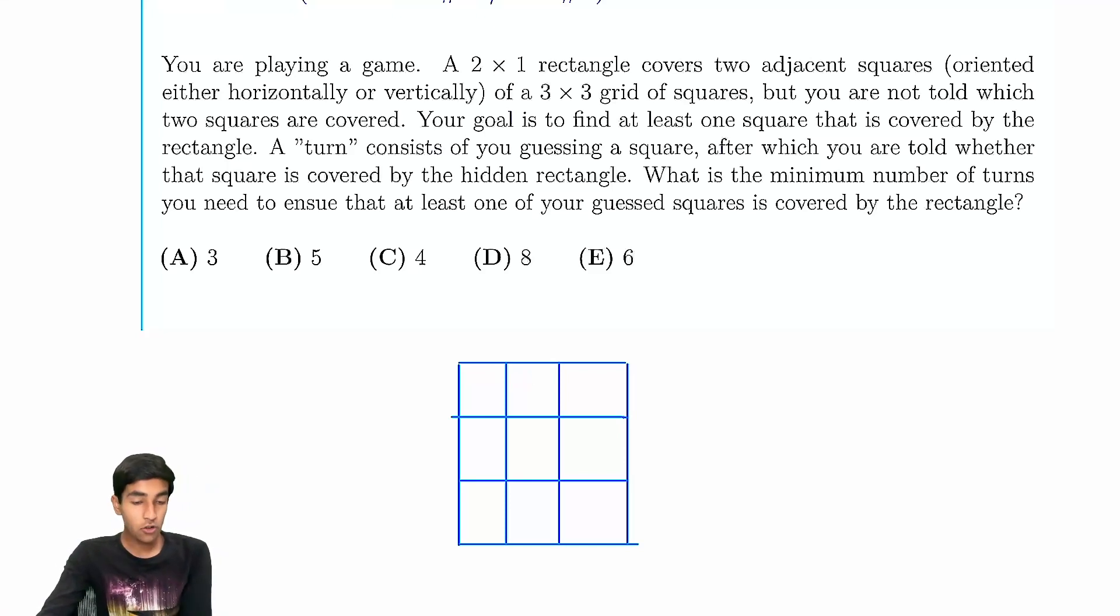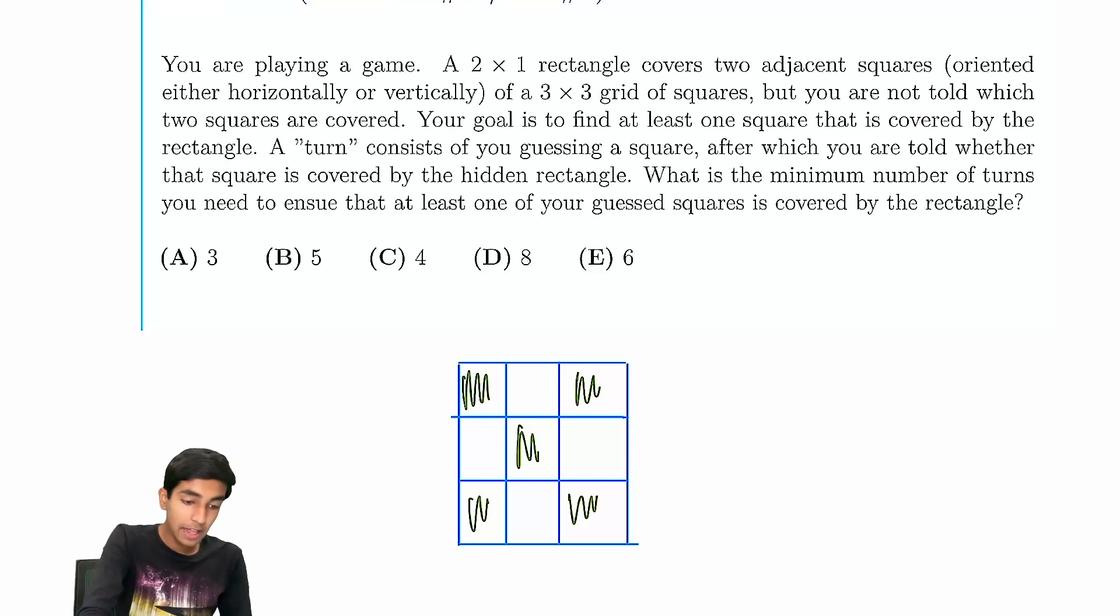So the key trick here is a coloring argument. We're going to color these squares green, let's say, and then we're going to color these squares red.